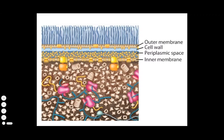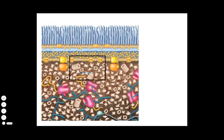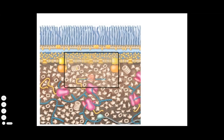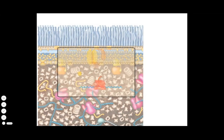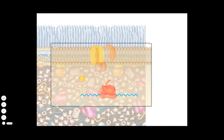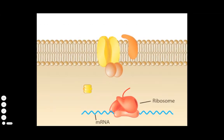Many periplasmic proteins are delivered to the periplasm by a common pathway called the general secretion pathway, involving SecA protein. There are several steps in the general secretion pathway.